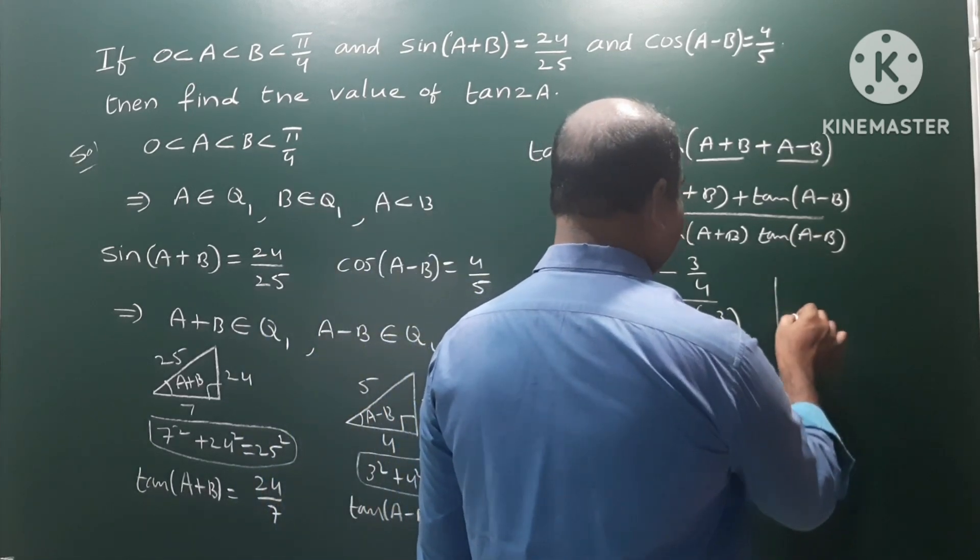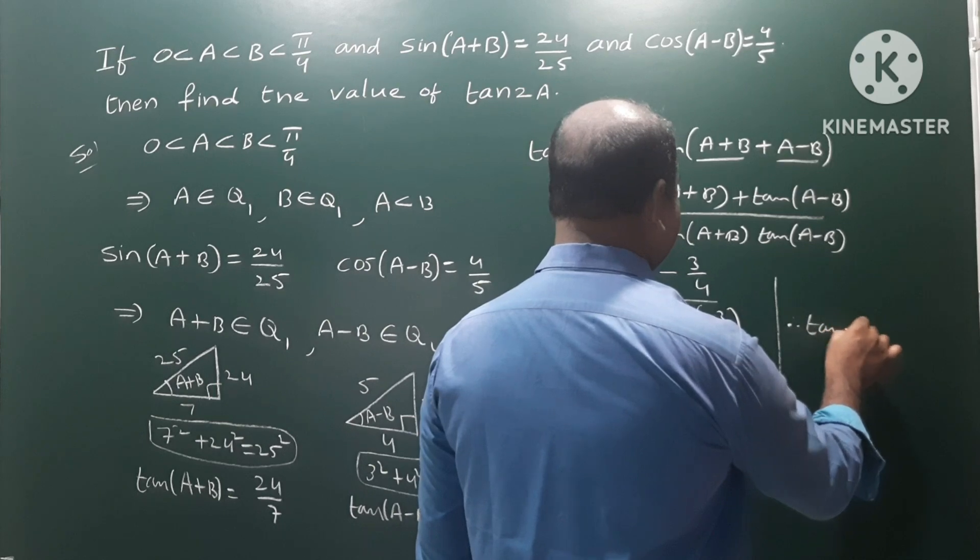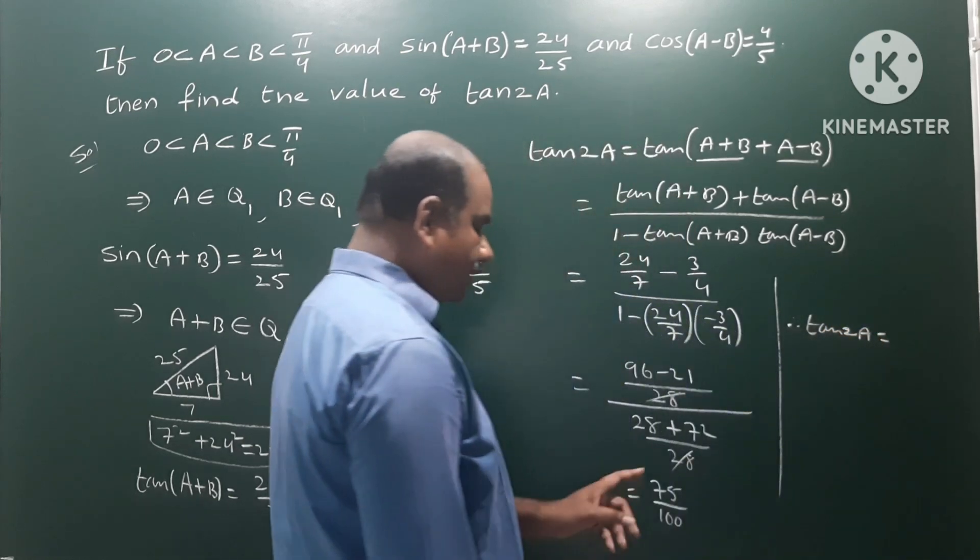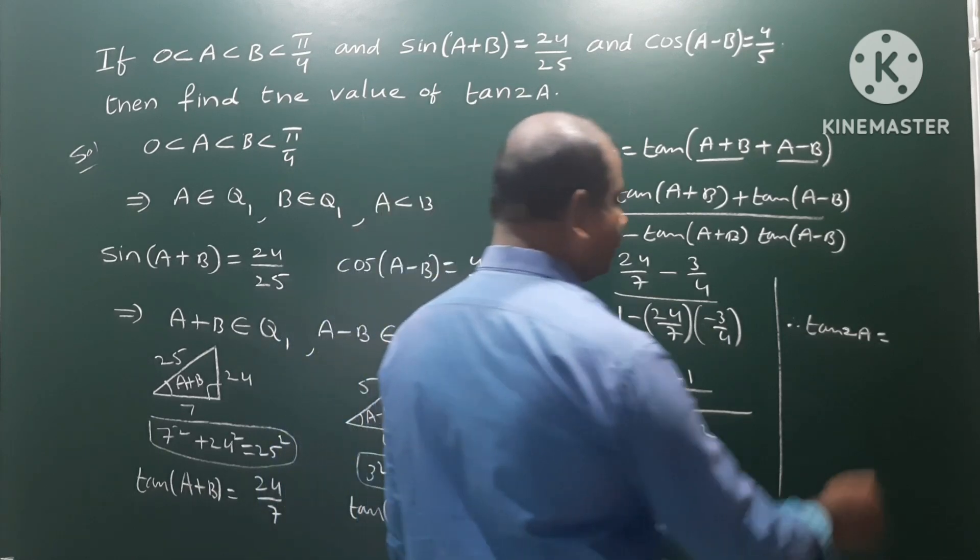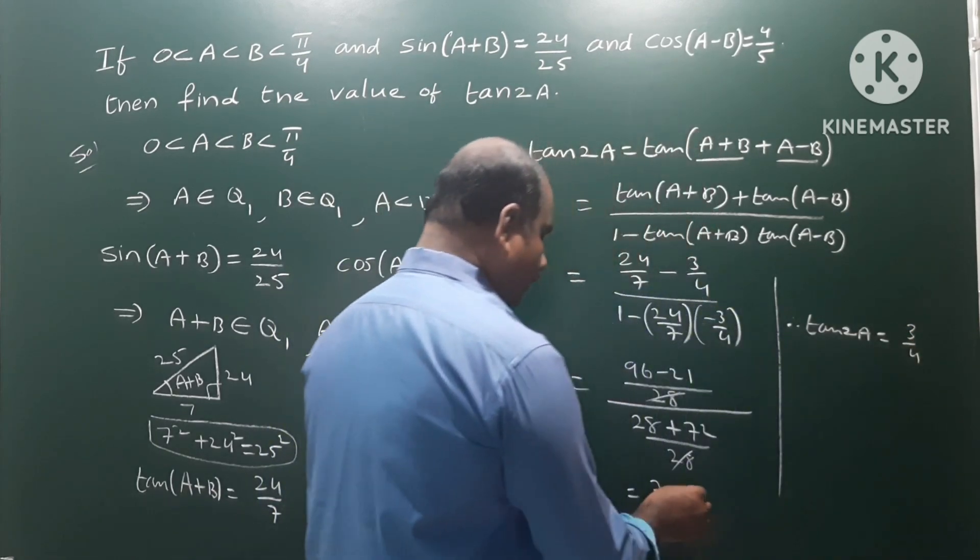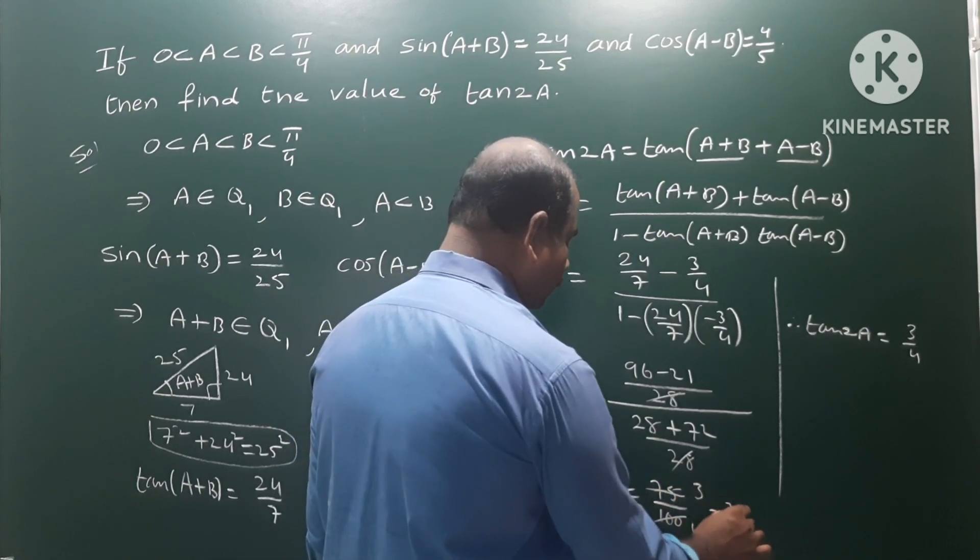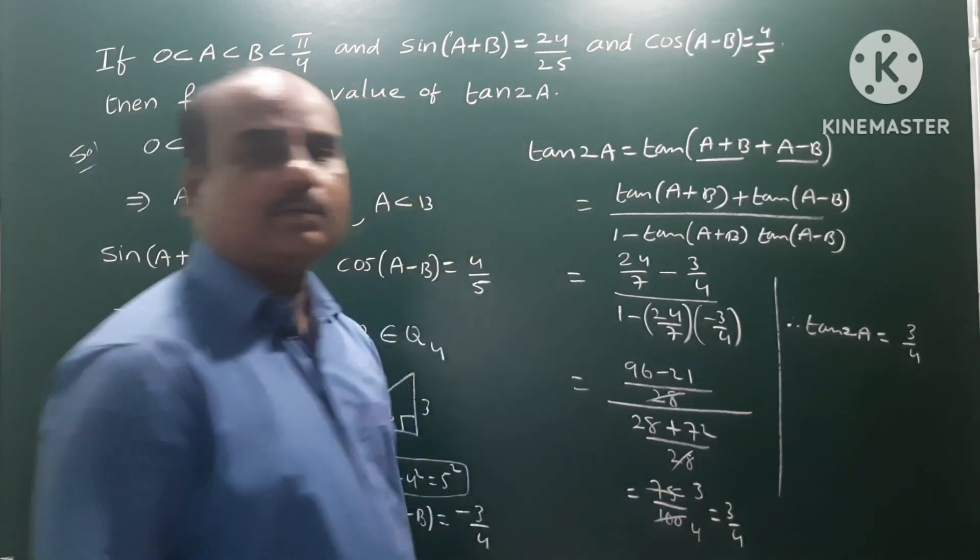Therefore, tan 2A equals 75/100, which simplifies to 3/4. This is the answer: 3/4.